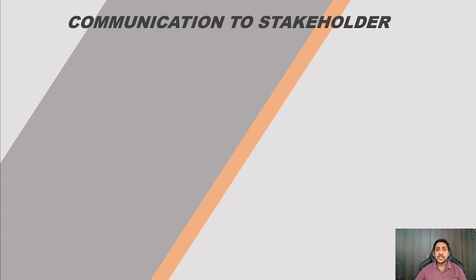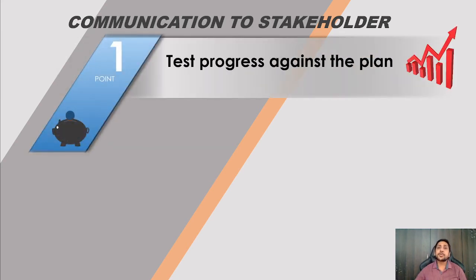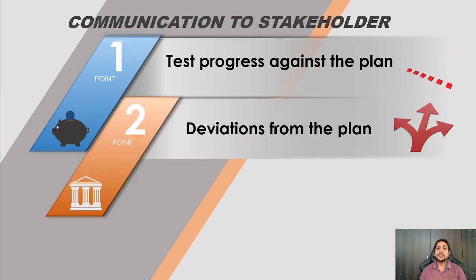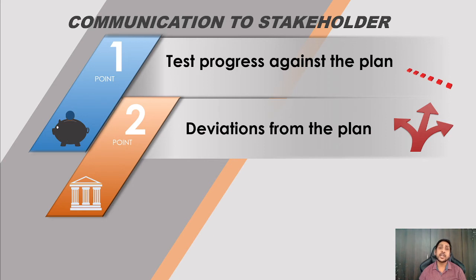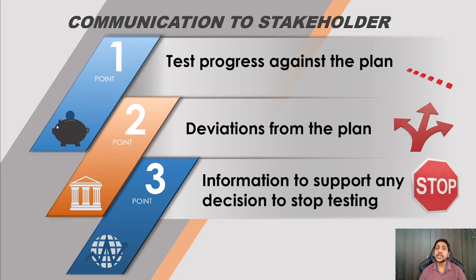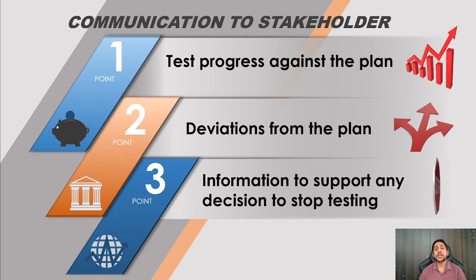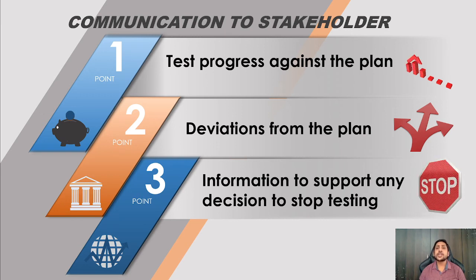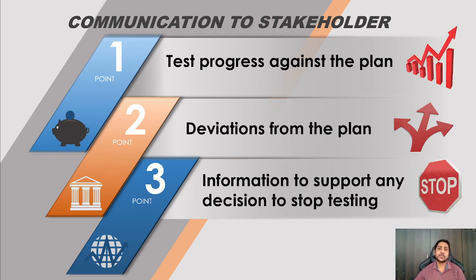An important reason for the monitoring stage is communication to stakeholders. Using this data we can communicate: test progress against the plan (what was planned vs. what was achieved), deviations from the plan (e.g., planned 100 test cases but completed 90), and information to support any decision to stop testing (e.g., if the software is unstable on the first day). Such decisions can be communicated to managers, customers, or leads. Monitoring is therefore very much required.